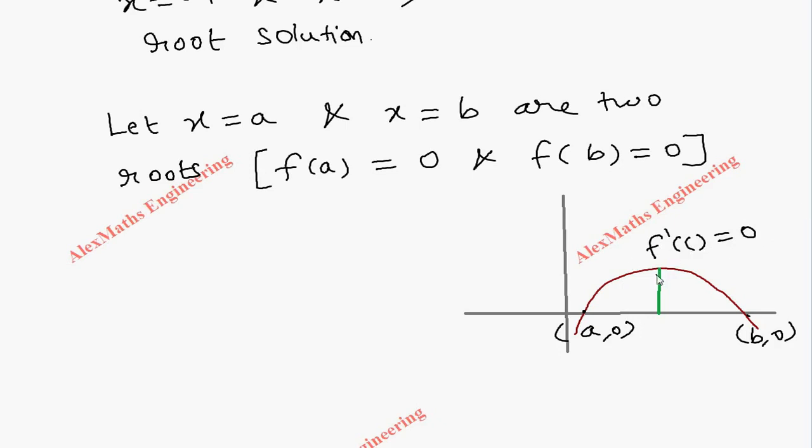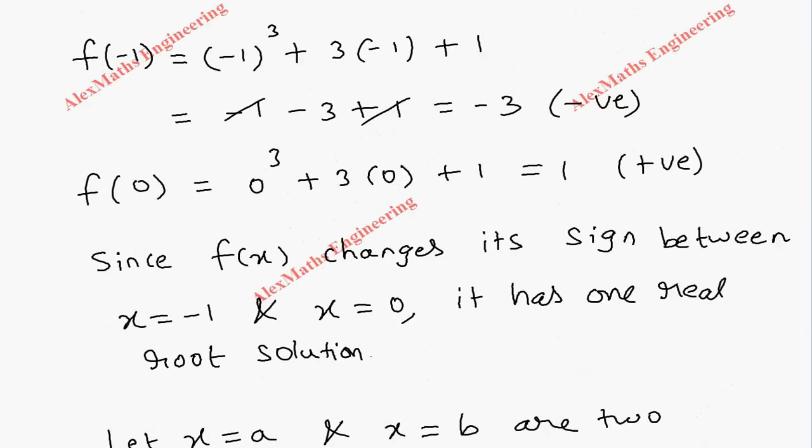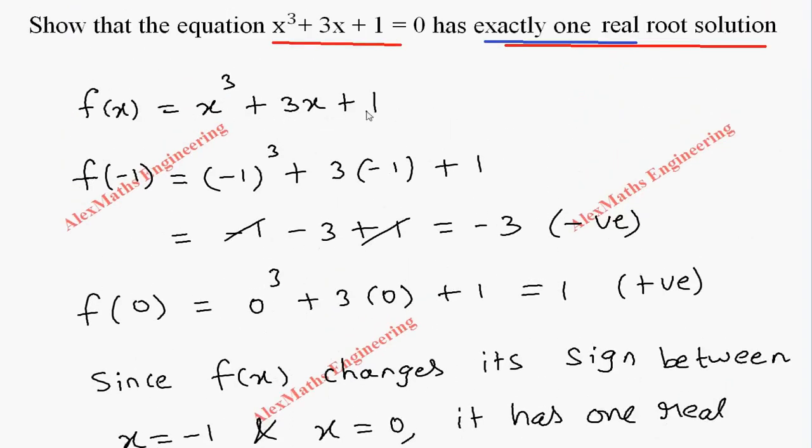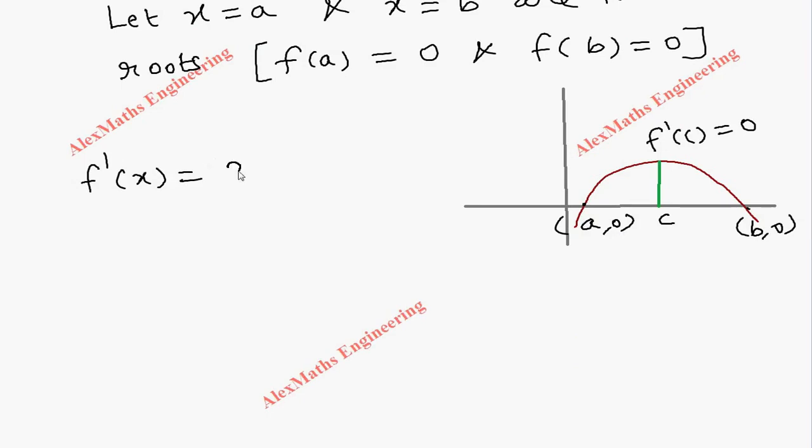So we have to find the value c. For that we need f'(x). The derivative of the given function x³ + 3x + 1 is 3x² + 3. What value of x makes this 0 we have to find. But no value of x will make this 0 because this is always greater than 0.